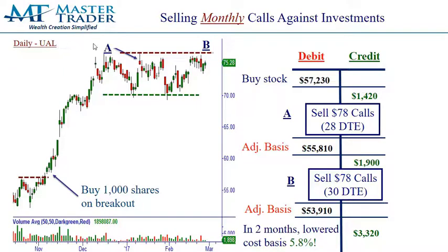Let's just assume you bought a thousand shares down here on this breakout. It's been a stellar mover. It got toppy here, very extended. So we go to the option market and we sell. With 28 days remaining, we sell the next month out $78 calls. The stock's trading in the low $75s, so you're giving somebody the right to buy your stock from you at $78 a share on or before 28 days.